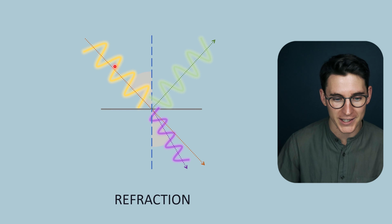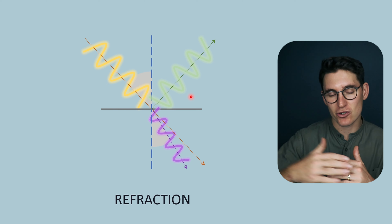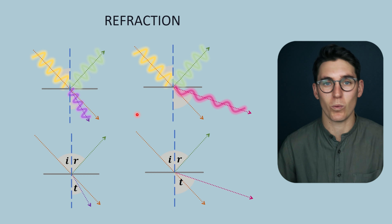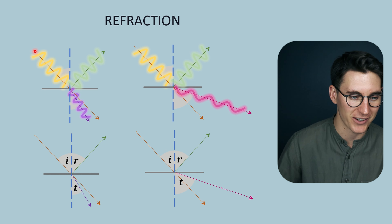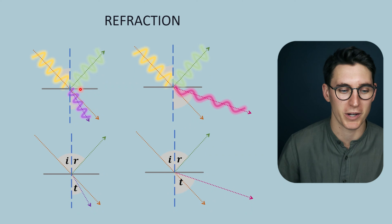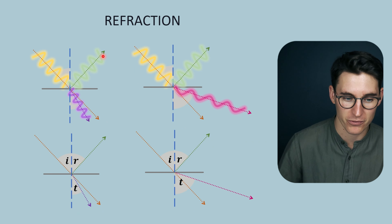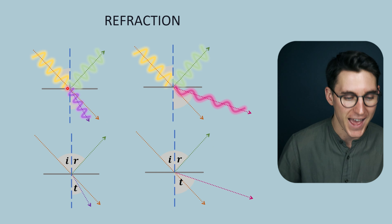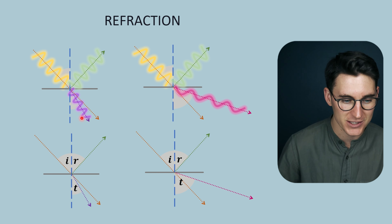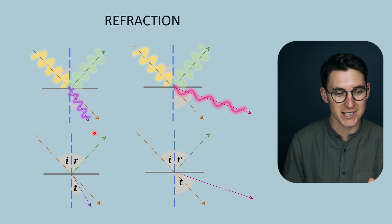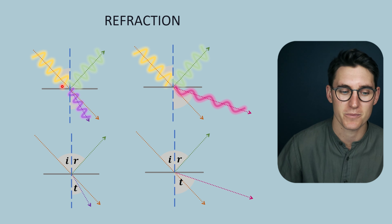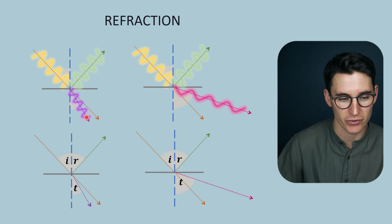When we combine specular reflection and transmittance, we get what's known as refraction. Our incident ultrasound beam coming in at an angle to a tissue boundary results in specular reflection and transmittance of an ultrasound pulse. This transmitted ultrasound pulse is not parallel to the incident ultrasound pulse — there has been a change of angle. Either the angle gets smaller or the angle gets bigger.